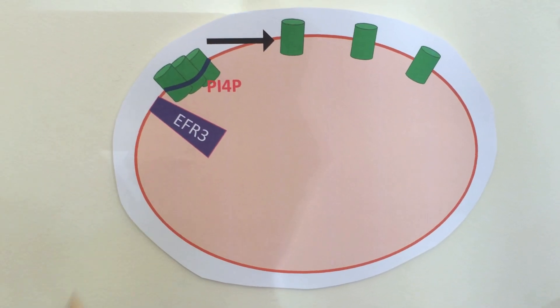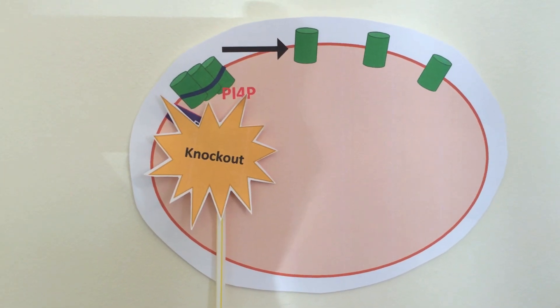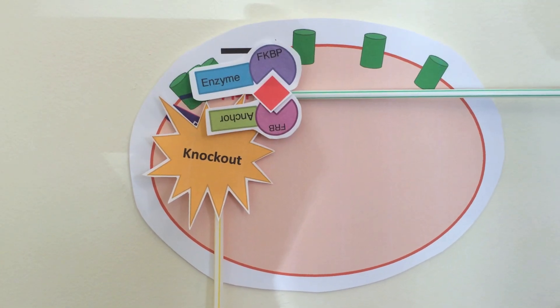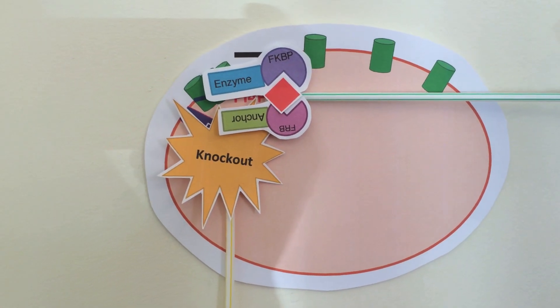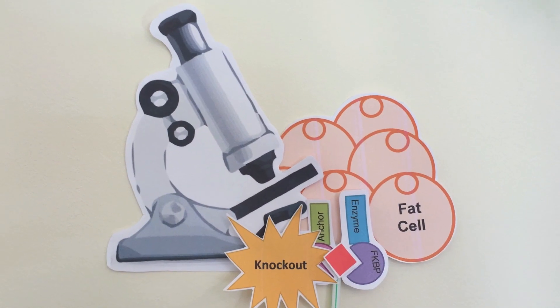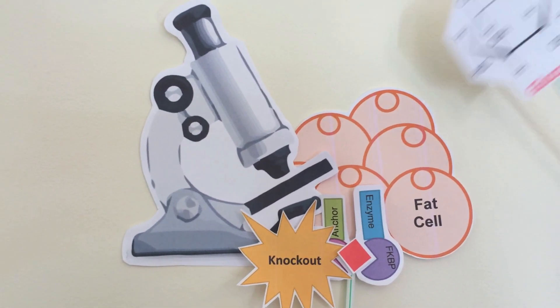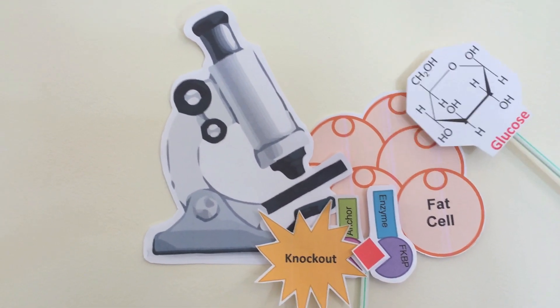To test their role, we use knockout experiments to remove EFR3 and enzymes to remove PI4P clusters in fat cells. We then visualize the effects with microscopes and measure how glucose uptake is changed to understand their importance.